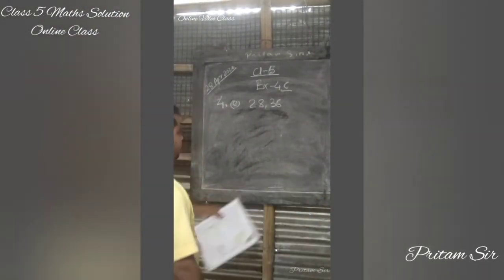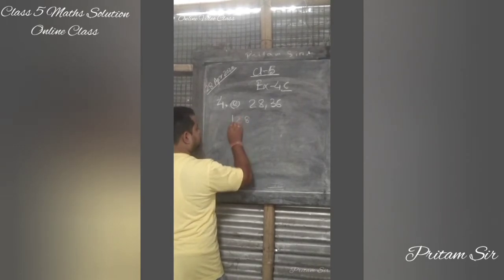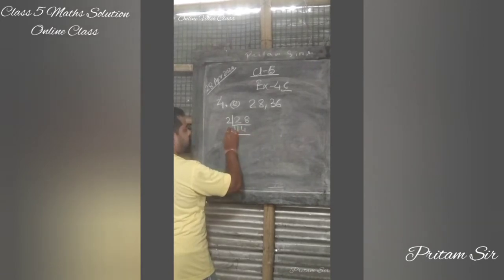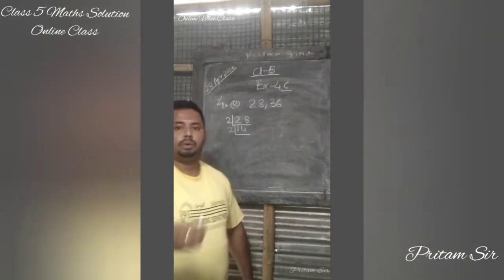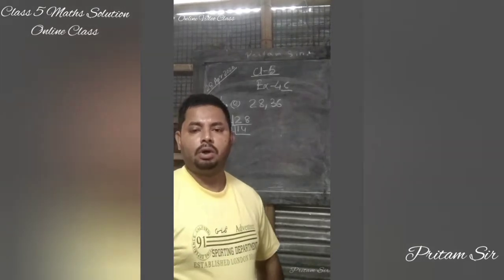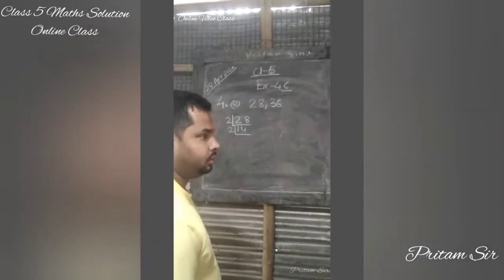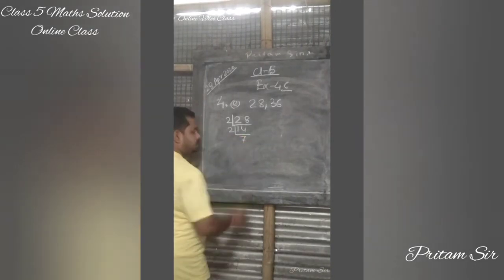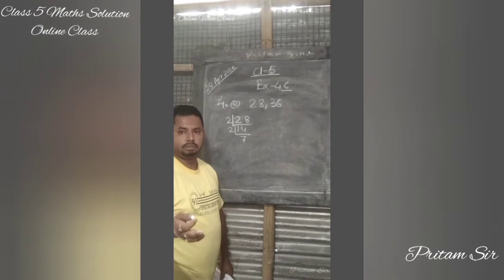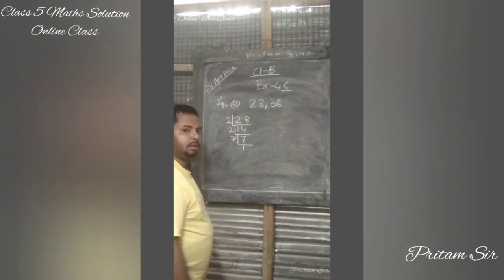Our next question is 4E: find the HCF of 28 and 36. For 28, dividing by 2 we get 14; dividing 14 by 2 again we get 7. When the number is not even, we move to the next prime number — 3, then 5, and so on. Since 7 is not even and not divisible by 3 or 5, it is divisible by 7 itself, so 7 is a prime number.